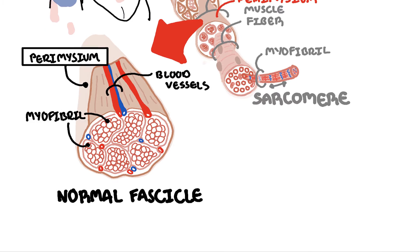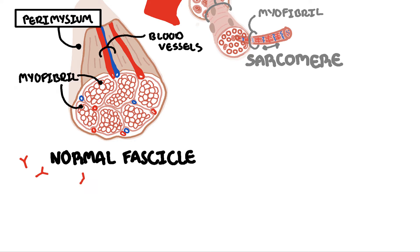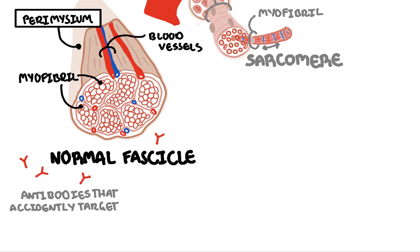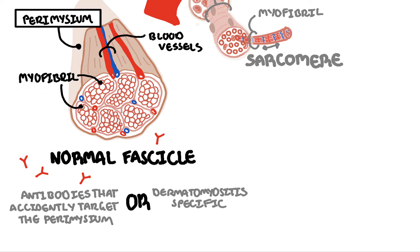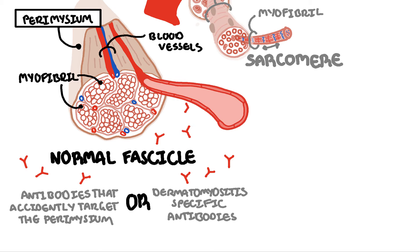The thought is that there are antibodies which accidentally mistake part of the muscle as foreign, possibly following an infection. Or there are dermatomyositis-specific antibodies that people have that target the muscle. The antibodies target the perimysium, including the blood vessels there.